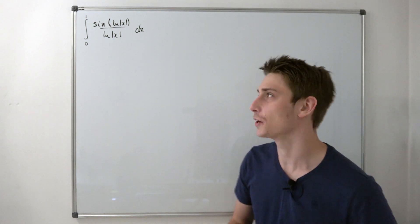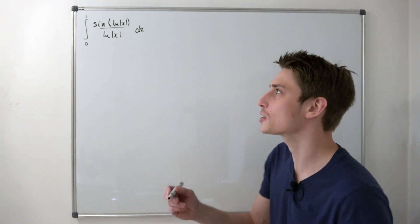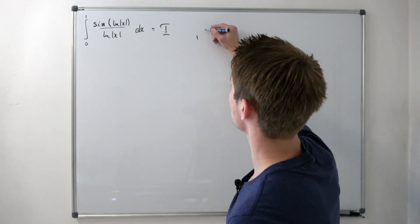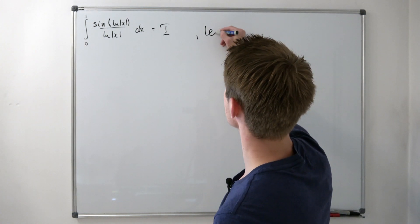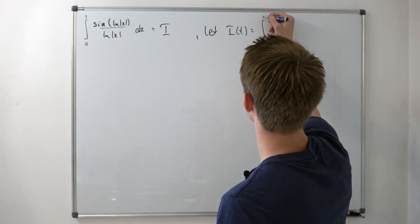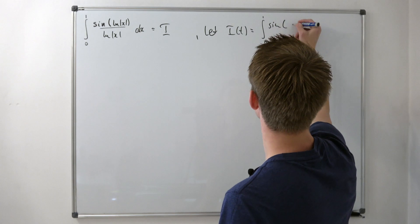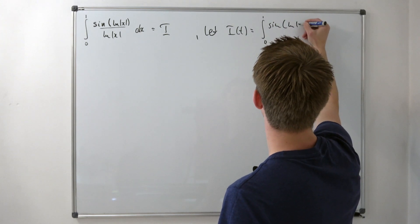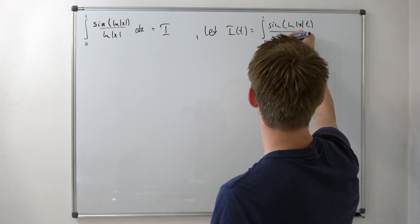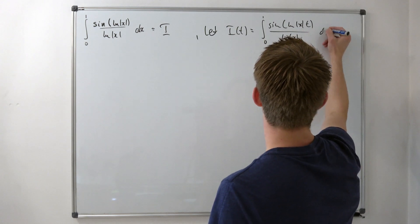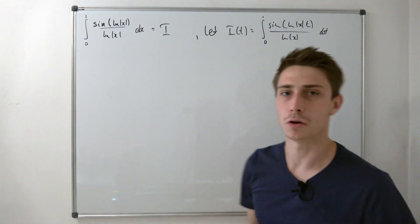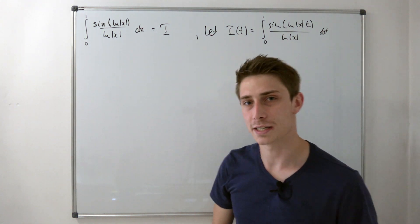It got sent to him, so maybe I'm giving it a shot. So let's call this integral I, and let's define a new integral: let I with respect to t be equal to the integral from 0 to 1 of sine of (t · ln x) over ln x dx.